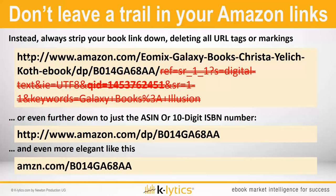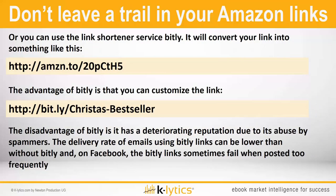So you have to avoid this. Instead, always strip your book link down by deleting all URL tags and parameters. In this case, take out all the extra stuff from the URL. You can trim it down to just the Amazon identification number, or the 10-digit ASIN version. The link would look like that and works very nicely. Or even more elegantly, just type 'amzn' — short for amazon.com — followed directly by the ASIN number without the '/dp' part. Another option is to use the link shortener service Bitly, which will convert your link and recognize it as an Amazon link, creating an amazon.to link with a short code.